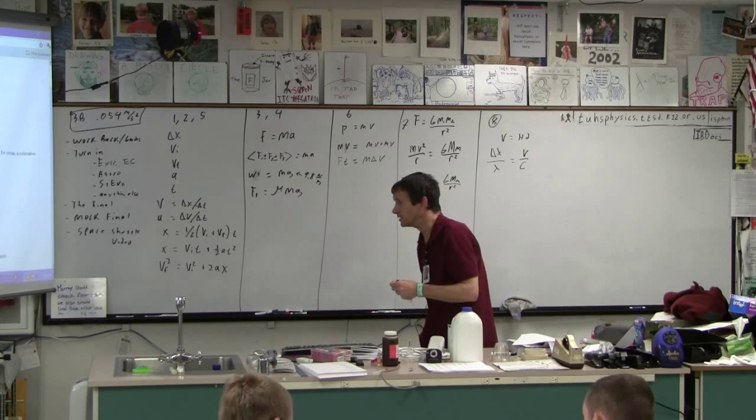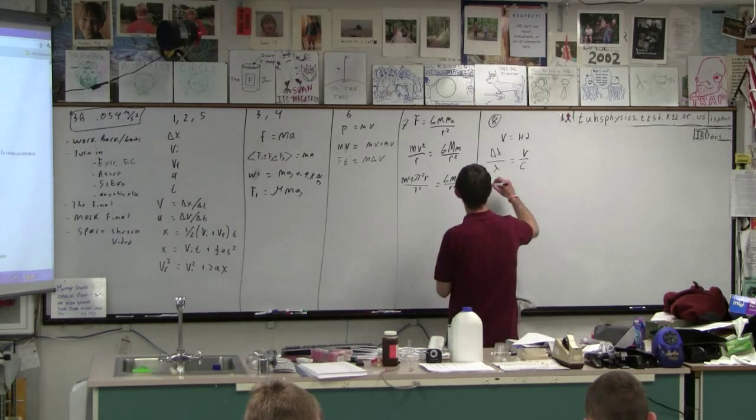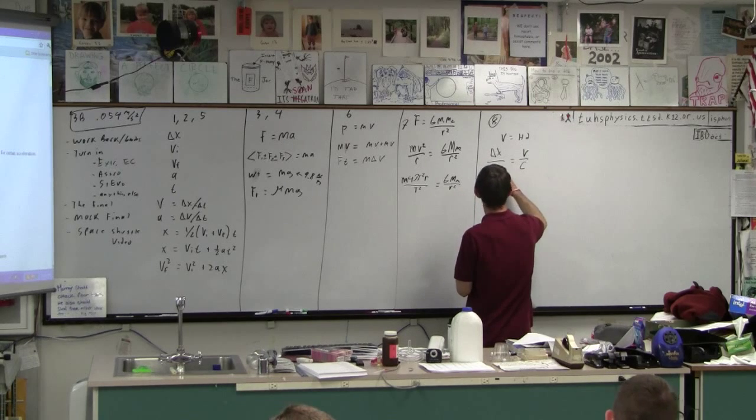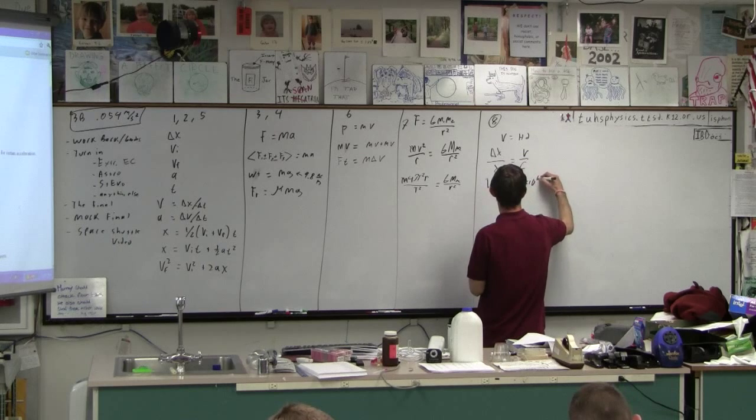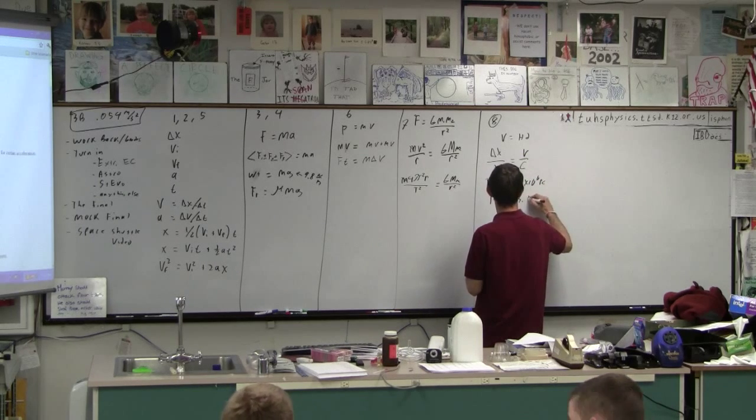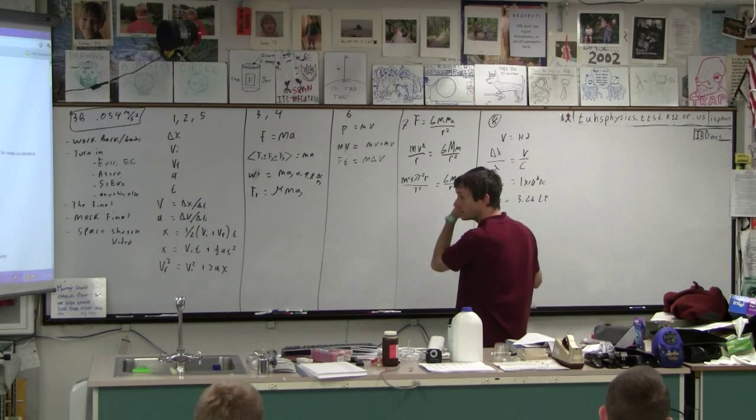Okay, parsecs to light years, right? So, you need to know that 1 megaparsec is 1 times 10 to the 6th parsecs, right? Then you need to know that 1 parsec is 3.26 light years. That's handy, right?